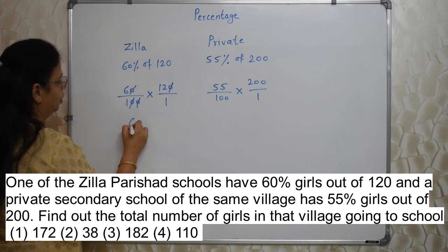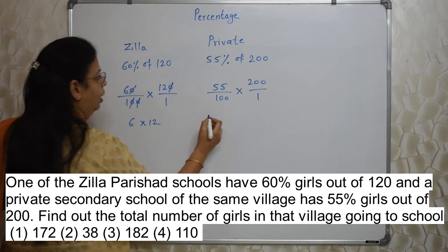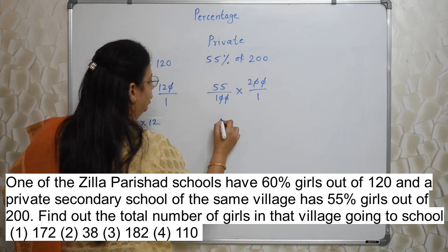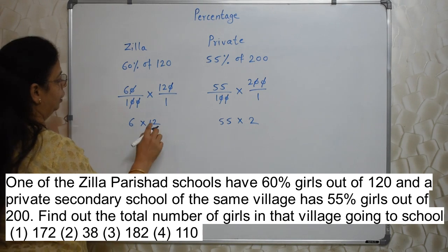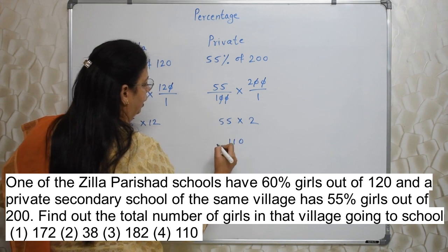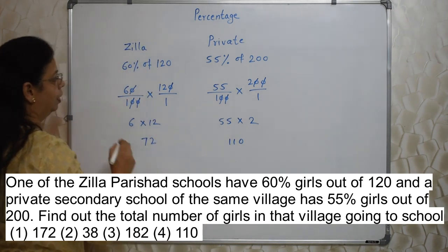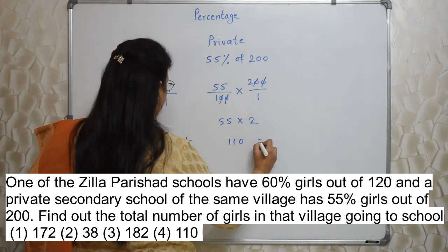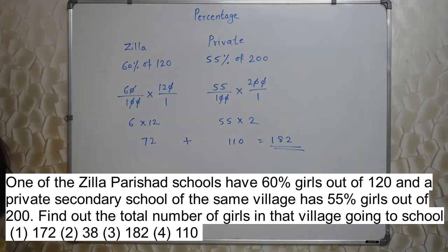What is remaining? 6 into 12, and 1 into 1 is 1 only. For the second part, after cancelling zeros, what is remaining is 55 into 2. So 6 into 12 is 72, and 55 into 2 is 110. They are asking the total number of girls going to school, so we need to add: 72 plus 110. The answer is 182.